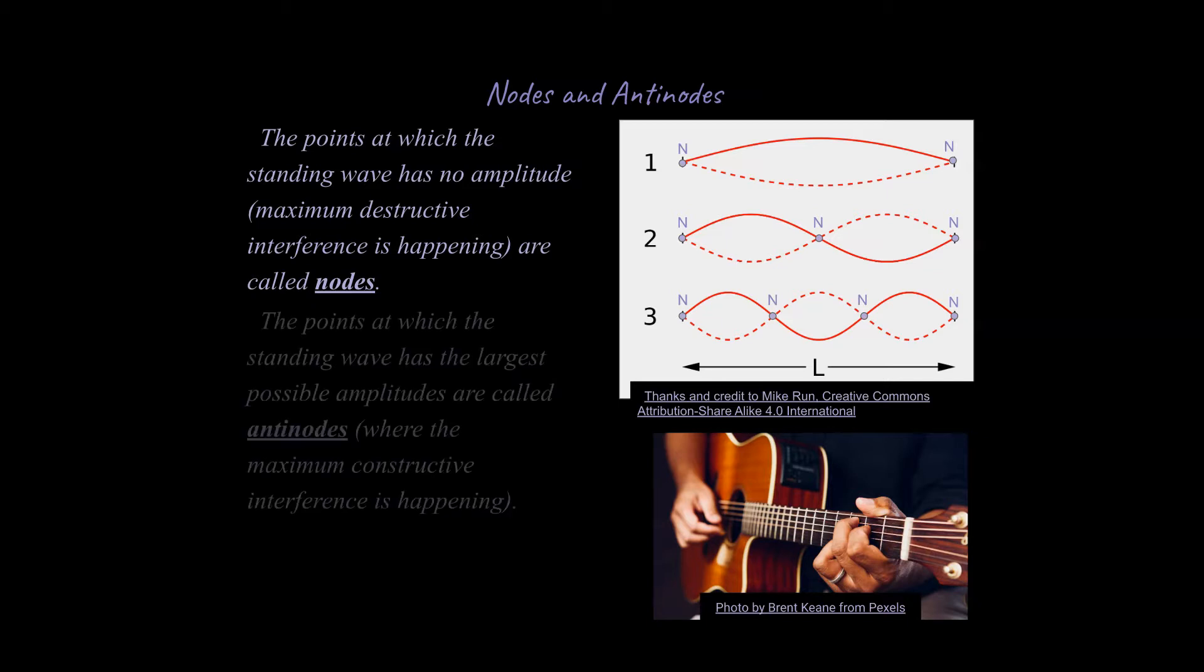And if you look, there's the opposite as well. The opposite is where we're going to have things called antinodes, and antinodes are going to be where you have the maximum amplitude for the resulting wave. So you could say that's where you have the maximum constructive interference happening.